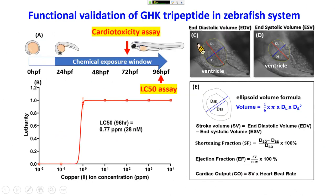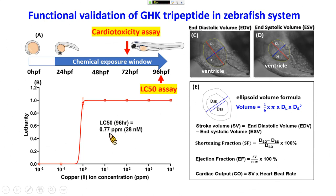We then used zebrafish to perform the cardiac toxicity assay. The protocol involved copper incubation from day one for 24 hours, continuing to day four. The LC50 for copper is very low — around 1 ppm, equivalent to about 28 nM — confirming copper is quite toxic to zebrafish. We used a mathematical formulation to calculate cardiac physiology parameters including cardiac output and stroke volume.